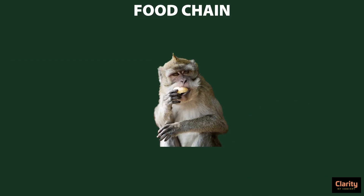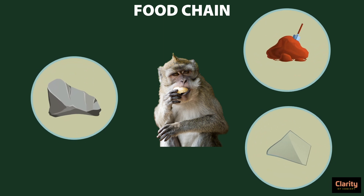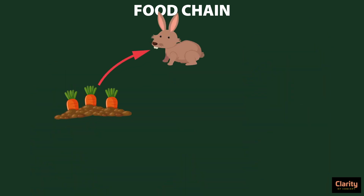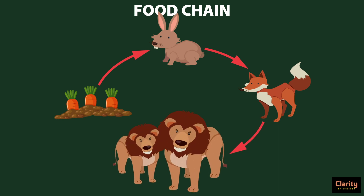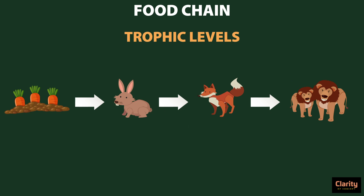Living things survive by eating other living things. You cannot eat rock or glass or mud — they are non-living things. So one species eats another species, and that species is in turn eaten by another species. This forms a sequence which is called a food chain. A food chain shows which species is directly dependent on another for their nourishment. Here comes the concept of trophic levels.